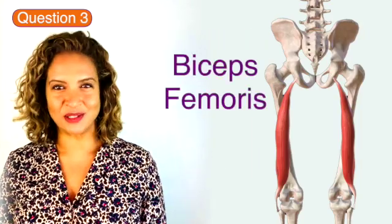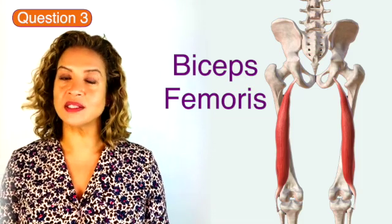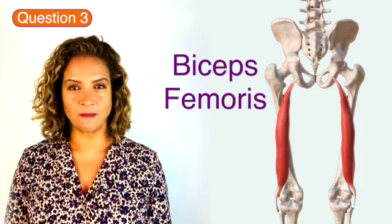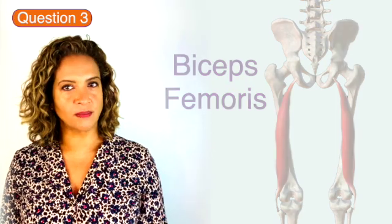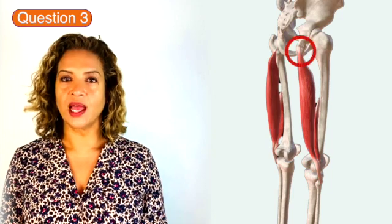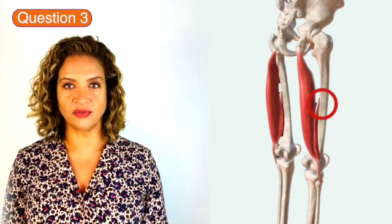Question three is biceps femoris which is one of the muscles in the posterior compartment of the thigh. It is one of the hamstring muscles and as you can see it has two heads. The long head is from the ischium and the short head is from the shaft of the femur.